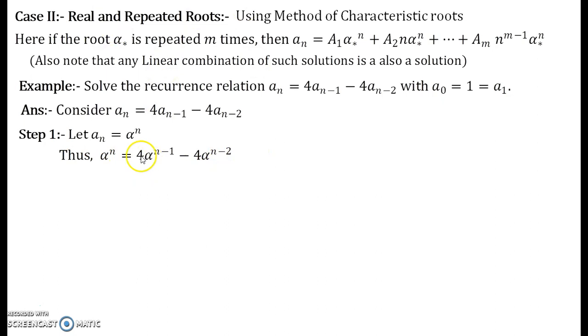Now the smallest power over here if you observe is n minus 2. So we divide the entire expression by alpha to the power n minus 2 on both the sides. So what happens is that I get alpha square is equal to 4 alpha minus 4. Take every term on the other side on the LHS.